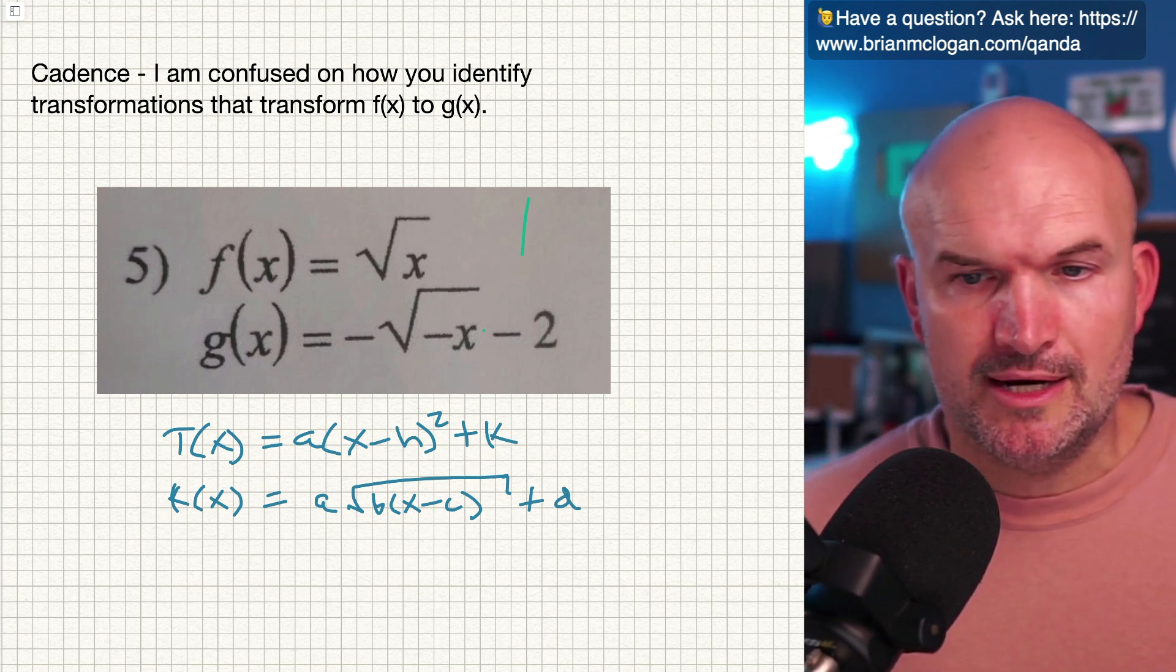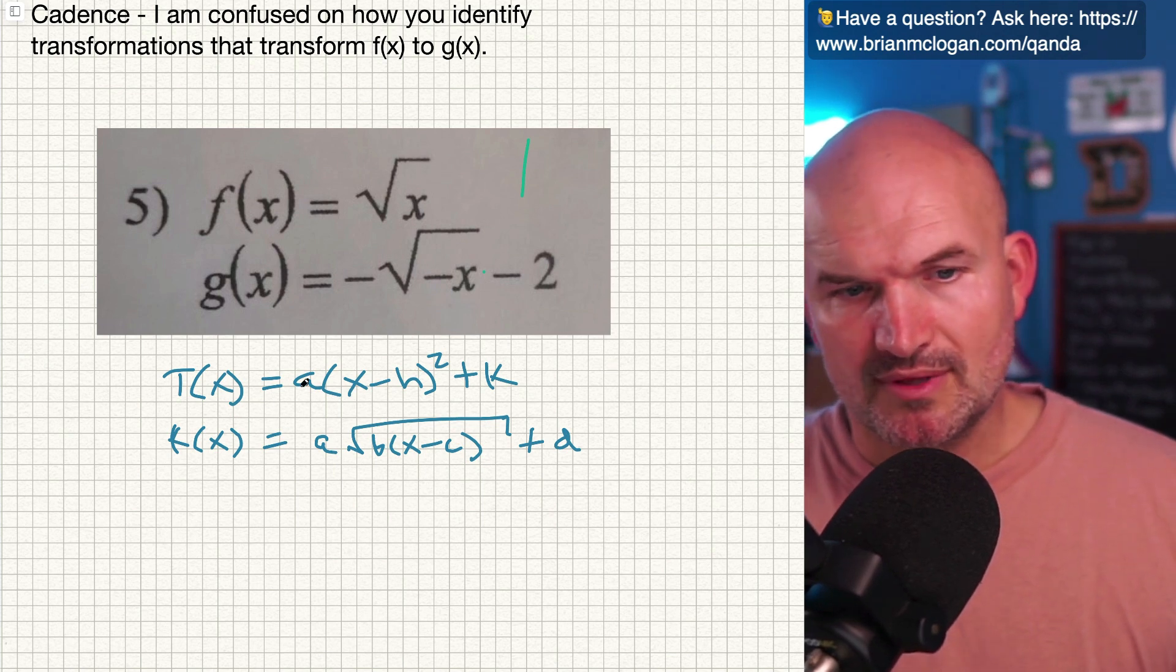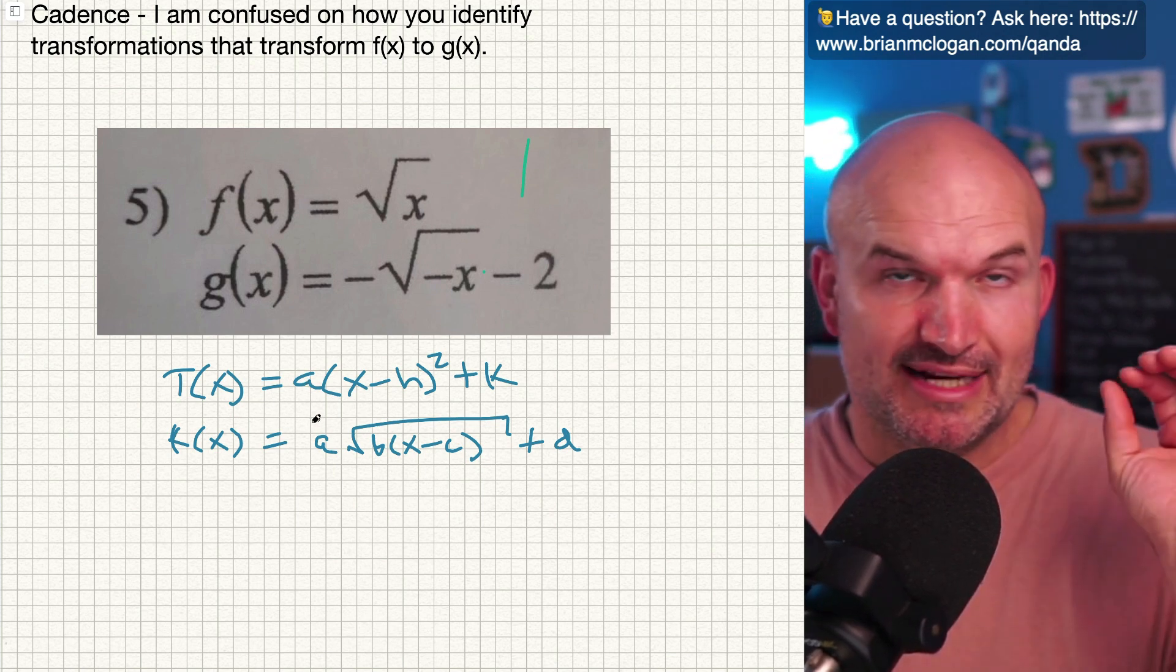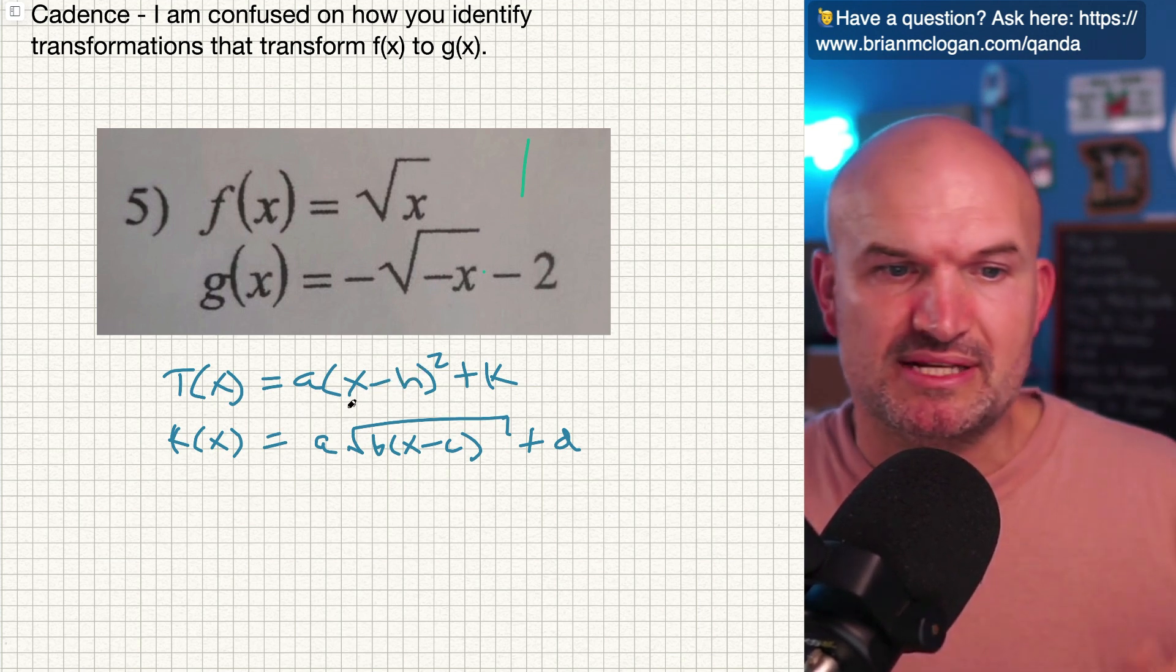Okay. Now, a couple of things I want you to see some characteristics or some changes here. A is still a number, right? Because a, b, c, d, h, and k, they all represent numbers. Okay. They represent constants.